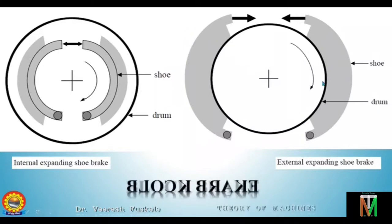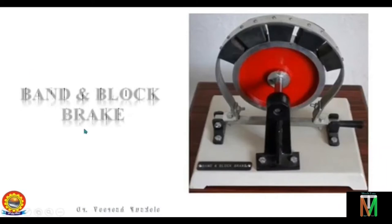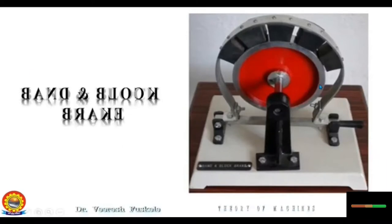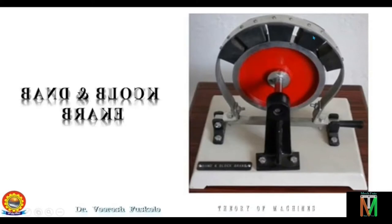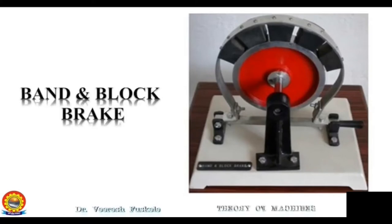In the external expanding shoe brake, the drum is pressed by two shoes from the outer periphery. The band-and-block brake consists of a number of wooden or rubber blocks secured inside a flexible steel band. When the brake is applied, the blocks are pressed against the drum, and the two sides of the band become tight and slack as usual. Wooden blocks have a higher coefficient of friction, thus increasing the effectiveness of the brake.